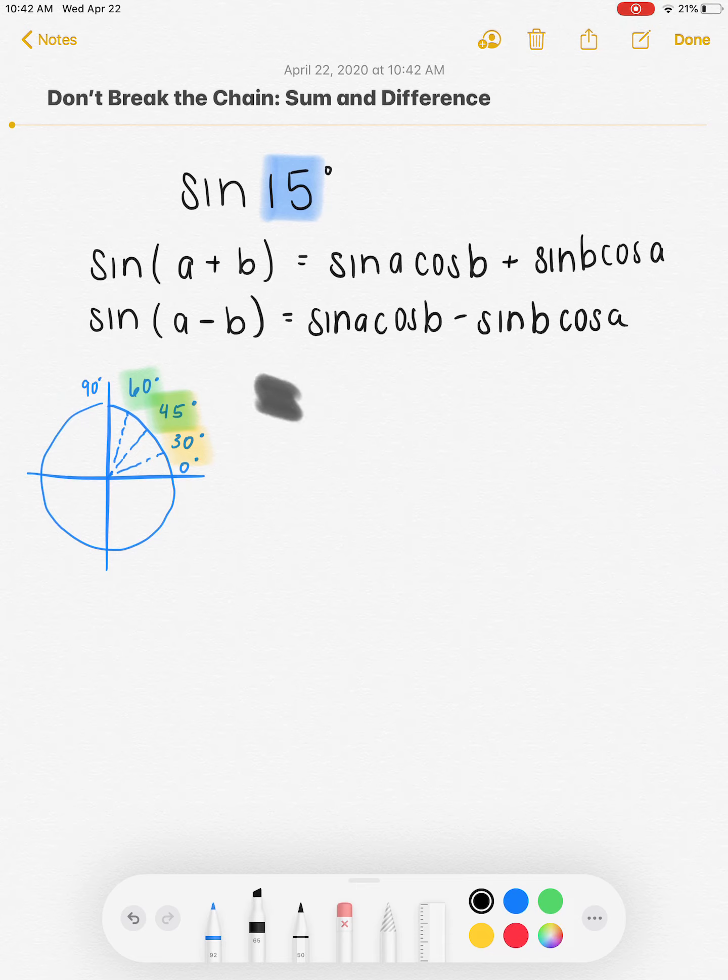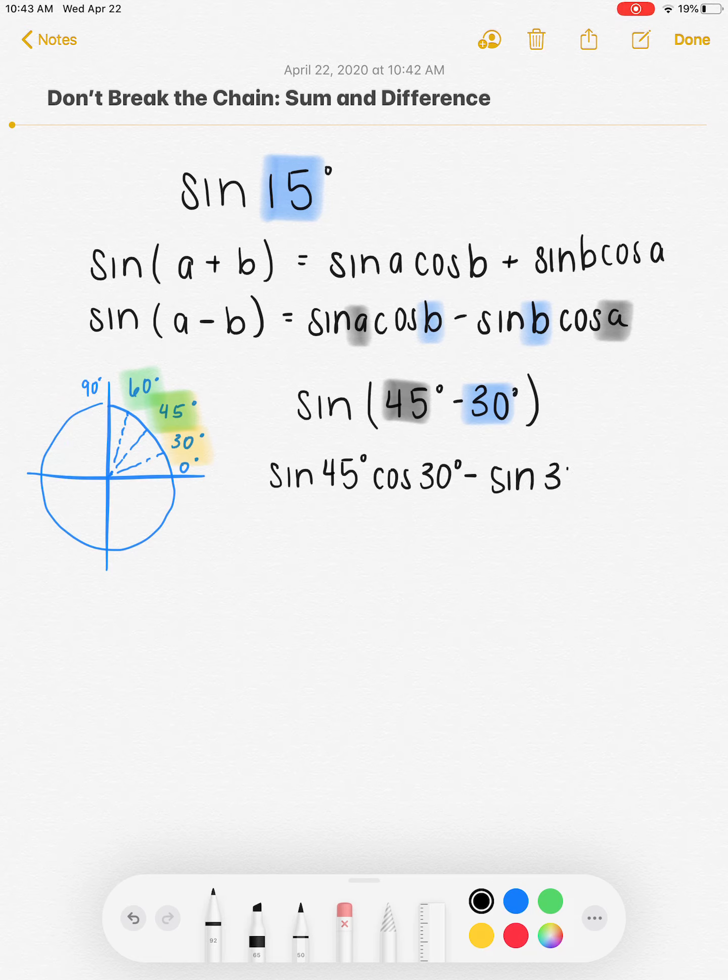So I'm going to rewrite it. Instead of writing sine of 15 degrees, I'm going to write sine of 45 degrees minus 30 degrees. And then my 45 is my A and my 30 is my B. So I'm just going to go back to my formula and everywhere I had a B, I'm going to replace it with 30. And everywhere I had an A, I'm going to replace it with 45. And then I'm going to use my knowledge of my unit circle to simplify it.